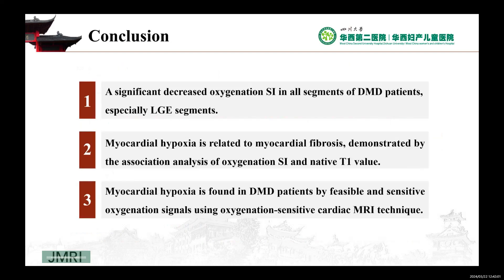Our study found a significantly decreased oxygenation SI in all segments of DMD patients, especially LGE segments. Myocardial hypoxia is related to myocardial fibrosis, demonstrated by the association analysis of oxygenation SI and native T1 value. Myocardial hypoxia can be detected in DMD patients using the non-invasive oxygenation-sensitive cardiac MRI technique. Myocardial oxygenation may be a quantitative imaging biomarker, and its correlation with fibrosis might potentially provide new insights into the underlying pathophysiological process of myocardial fibrosis in DMD cardiomyopathy.